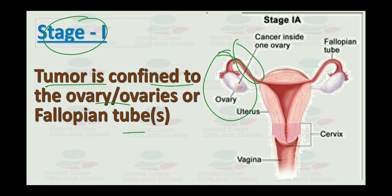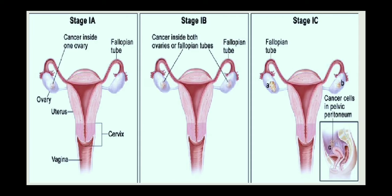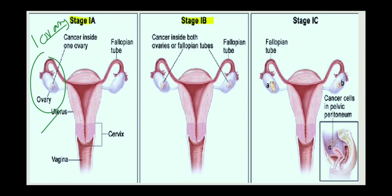Sometimes the tumor can go to the fallopian tubes. We can further divide stage 1 into stage 1a and 1b. In stage 1a, only one ovary or fallopian tube is affected. The tumor capsule is intact, no tumor is detected on the surface of the ovary or fallopian tube, and malignant cells are not detected in ascites or peritoneal washes.